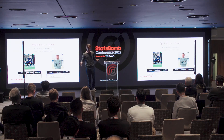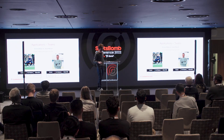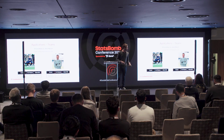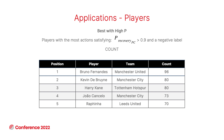Now let's look at applications for peer recovery and players. An important caveat: we cannot evaluate the defending side of players because StatsBomb 360 data does not identify who is on the pitch — only the position of players — so we can only see the attacking side. Using peer recovery PC, if we look at situations where the probability of losing the ball is very high and yet players don't lose it, we find the most progressive players in the league: Bruno Fernandes, Kevin De Bruyne, Harry Kane, João Cancelo, and Rafinha.